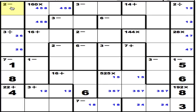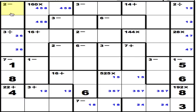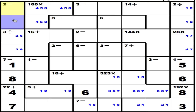Finishing out this row, we still need 3, 5, and 7. There's already a 3 down here in that row, so 3 must go up here. And the only way to get this answer of 2 would be 5 minus 3, leaving the 7 here. We have a 3 and a 5 left going here, but we don't know what order yet.